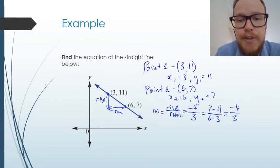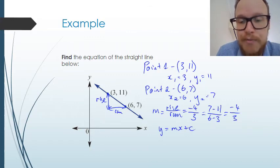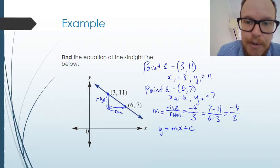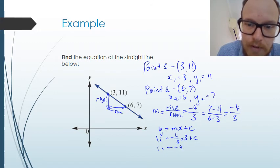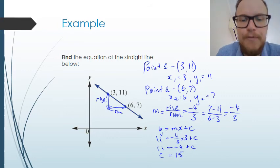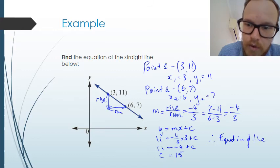Now I know my gradient. I can substitute that into y equals mx plus c, as well as one of the points. So I'm going to choose just point 1 here. So the y value for point 1 is 11. The gradient I know is negative 4 thirds. The x value is 3. And we're trying to find c. So this is going to be 11 is equal to negative 4 plus c. So therefore, c is going to be equal to 15 if I add 4 to both sides. So therefore, the equation of the line is y is equal to negative 4 over 3x plus 15.